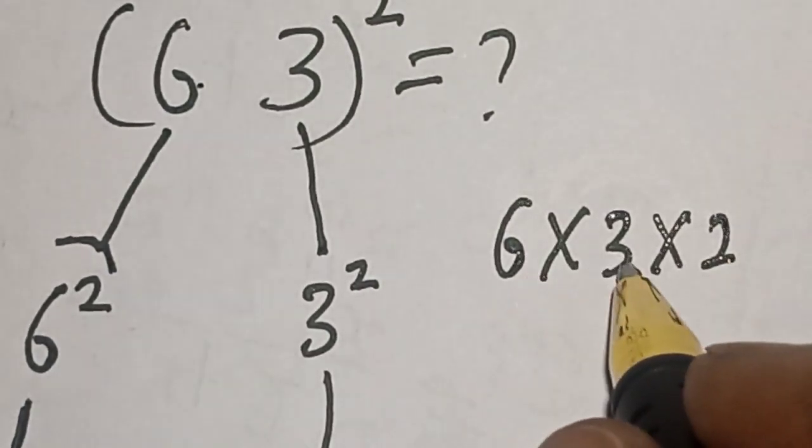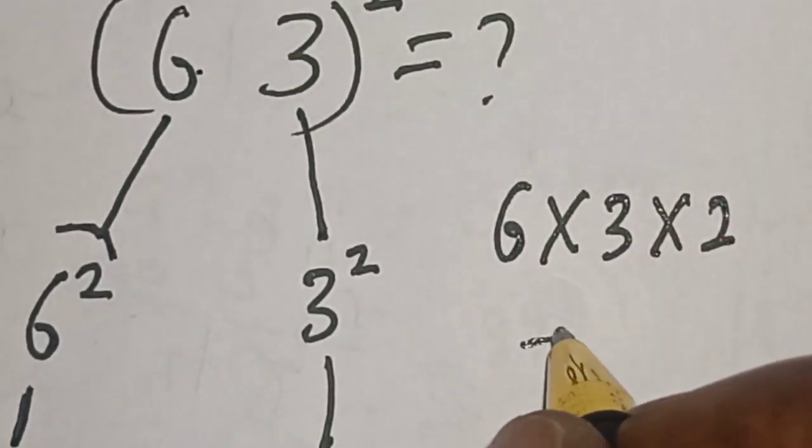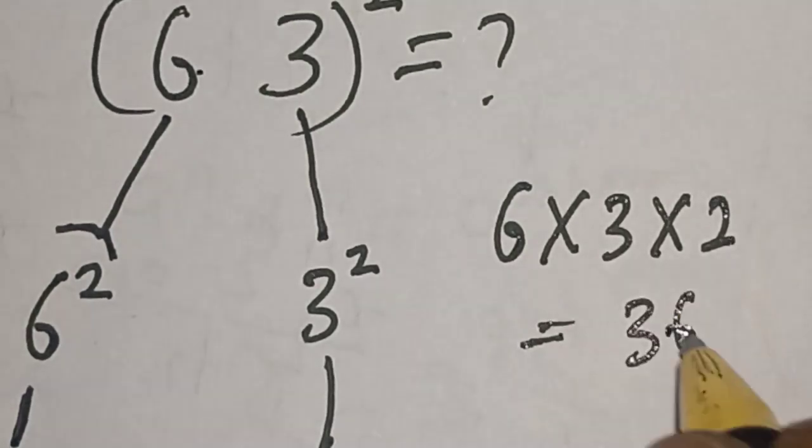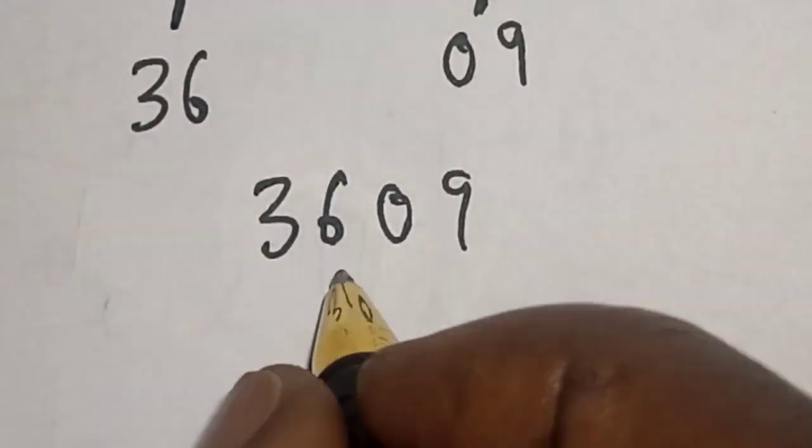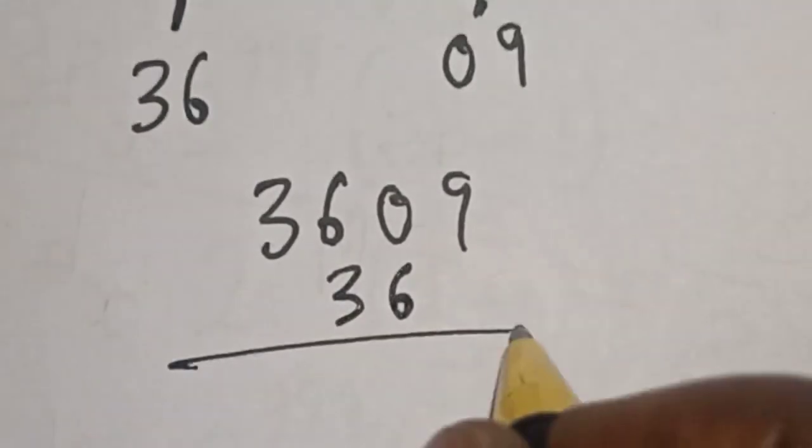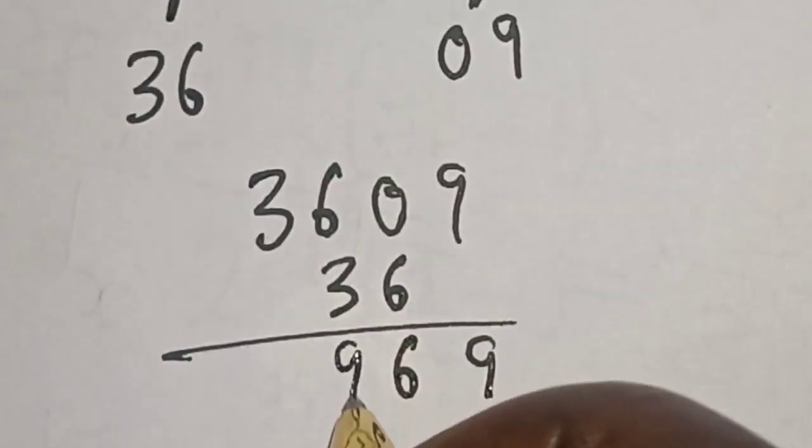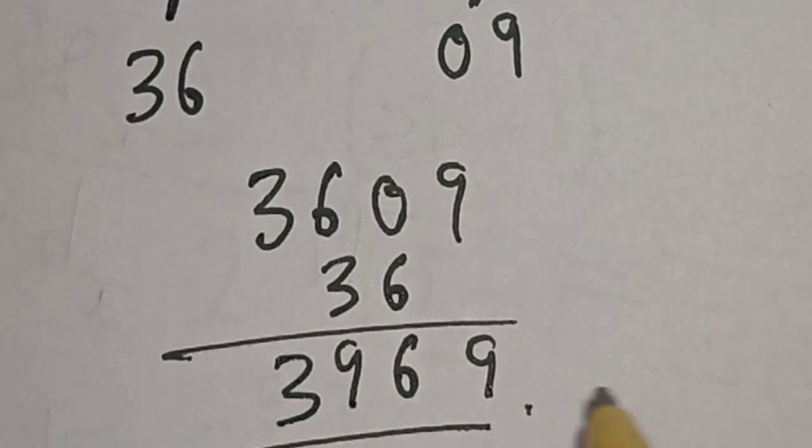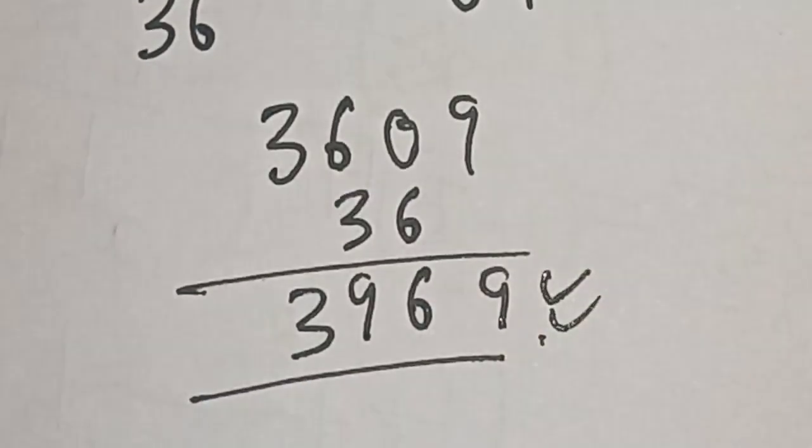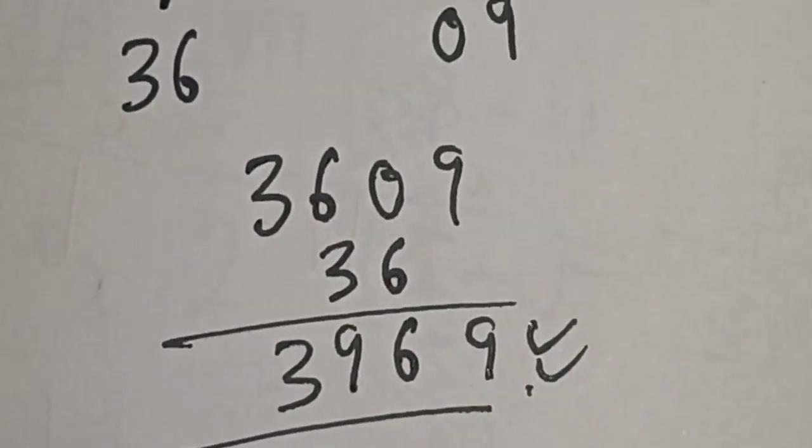6 times 3 equals 18, times 2, this is 36. Now let's add 36 to this. So we have 3969.